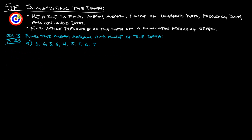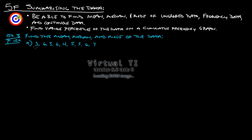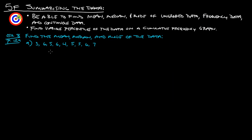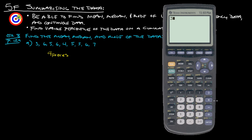So let's take a look at example 8 from page 129, which says find the mean, median, and mode of the data. Mean is just the average of all of these. So what we need to do is add all these up and then divide by however many we have, which is nine pieces of data. So let's add this all up: three plus six plus five plus six plus four plus five plus five plus six plus seven.